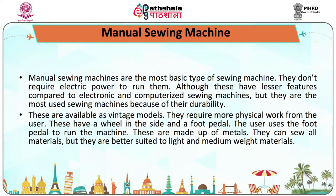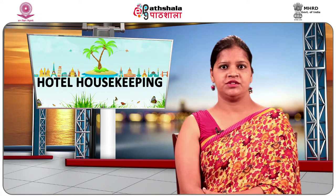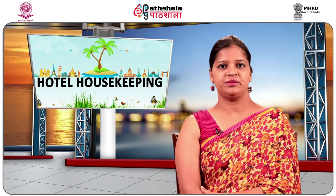Manual sewing machines are the most basic type. They do not require electric power to run, although they have fewer features compared to electronic and computerized sewing machines. They are the most used sewing machines because of their durability and are available as vintage models. They require more physical work from the user — they have a wheel on the side and a foot pedal. They are made of metal and are better suited for light and medium weight materials.